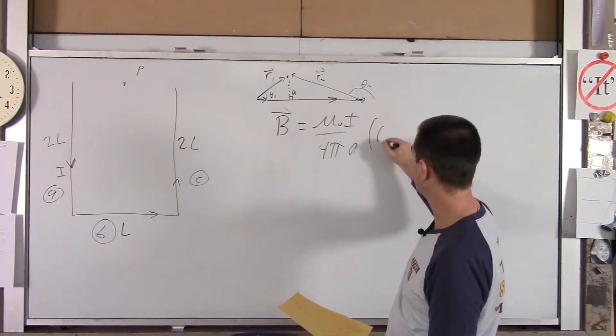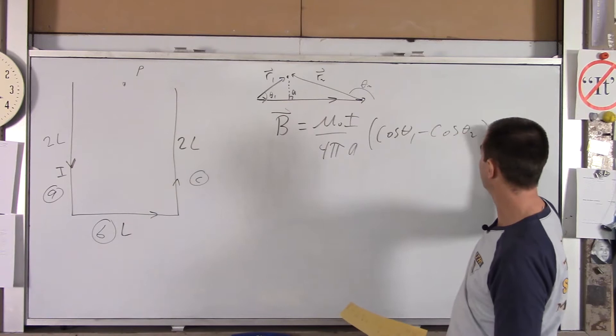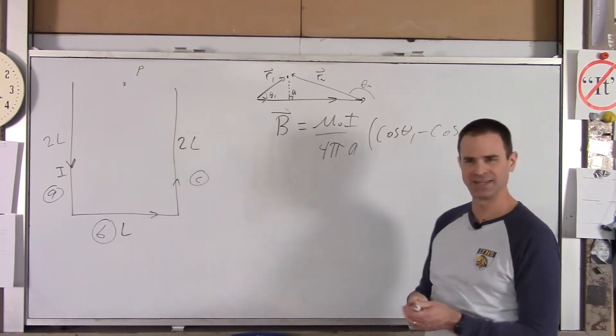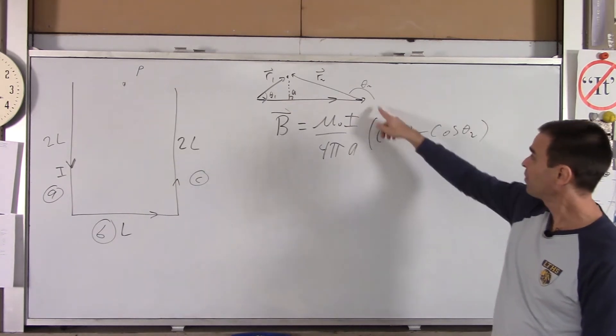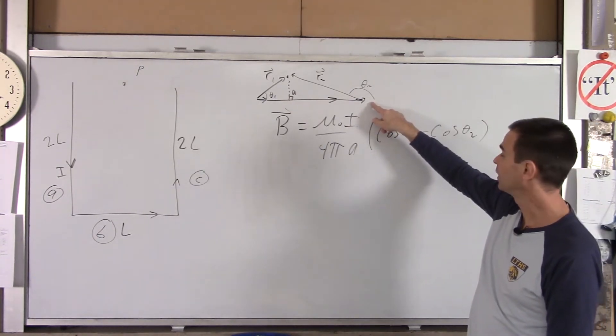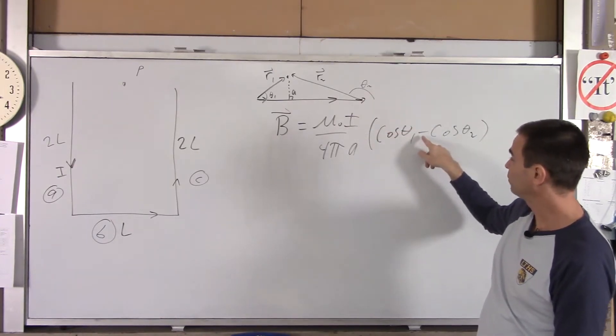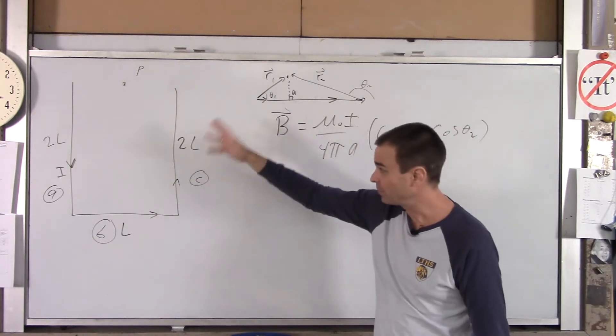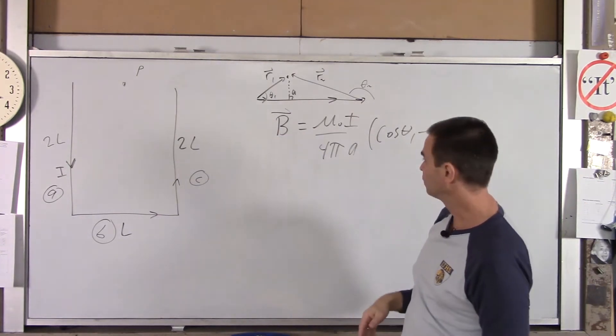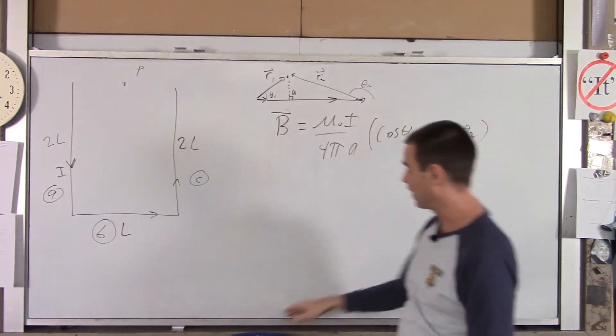The result we got in class is B, for this finite length of wire, is mu naught I over 4 pi a, a being the perpendicular distance from the wire to that point P, times cosine of theta 1 minus cosine of theta 2. So that's the result we got in class. So we're going to use that result here very carefully. Notice that theta 2 is obtuse. Cosine of that angle is negative. And in this equation, you would have minus a negative, which would actually turn into a positive. So that's going to come into play here a little bit.